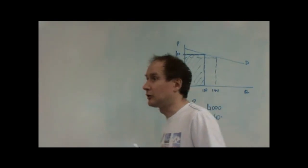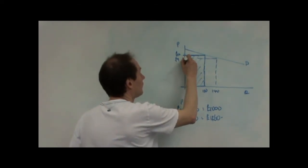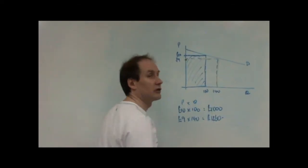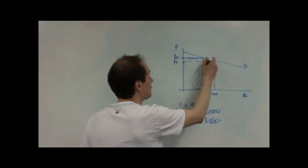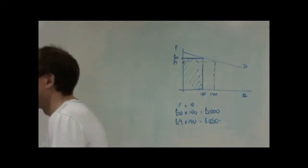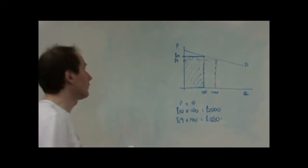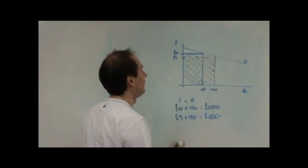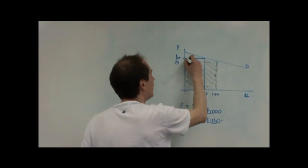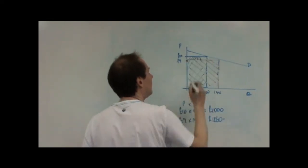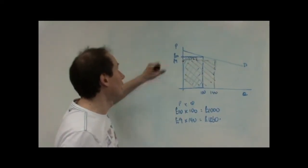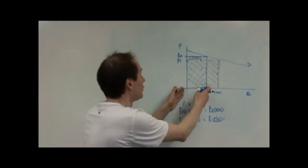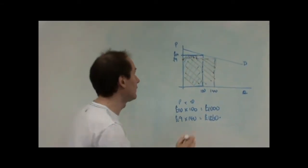And what's happened as a result of the change in price is that price is now £9. Quantity's gone up to 140. So, total revenue is now that area. Effectively, the firm has lost that area by cutting price from £10 to £9. So, on the original 100 units, it's lost £1 on each of those.